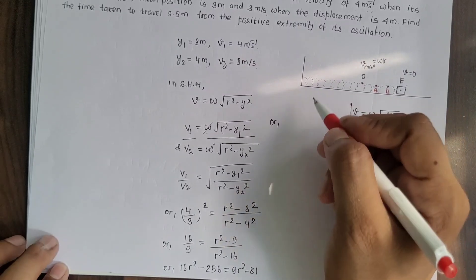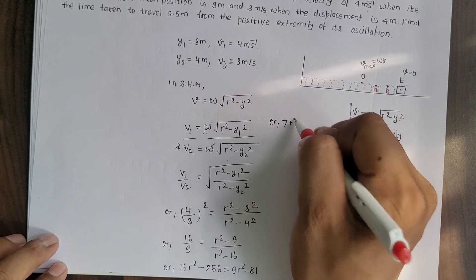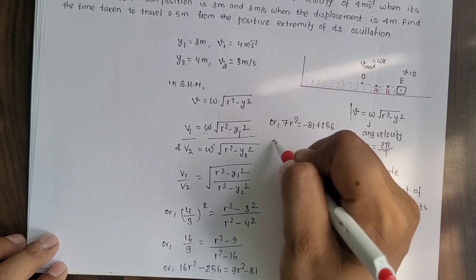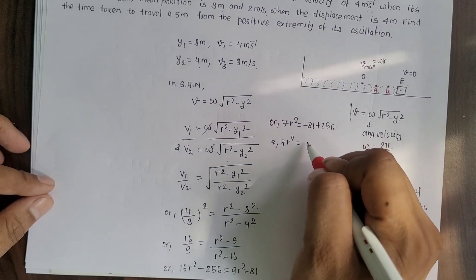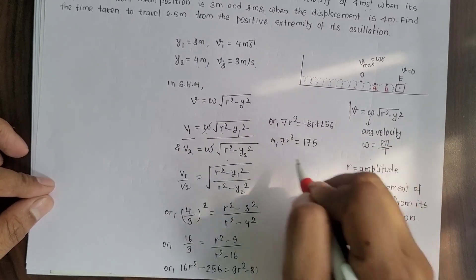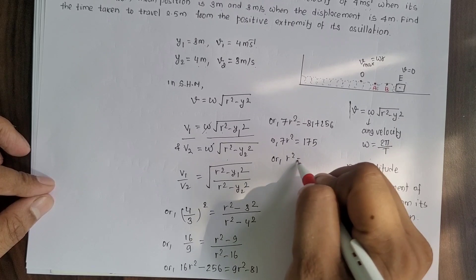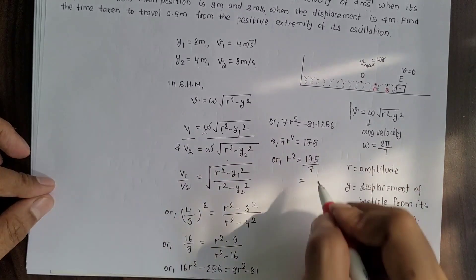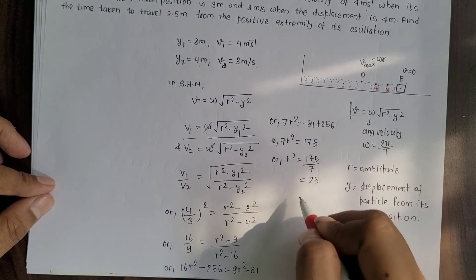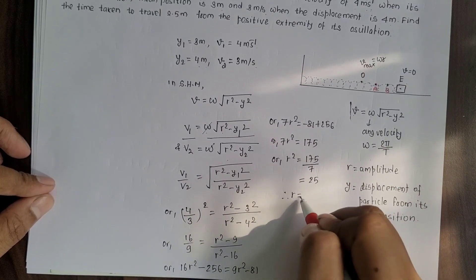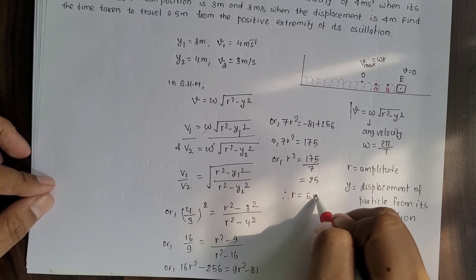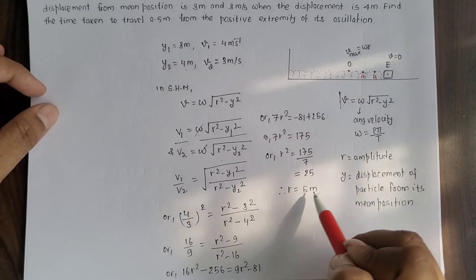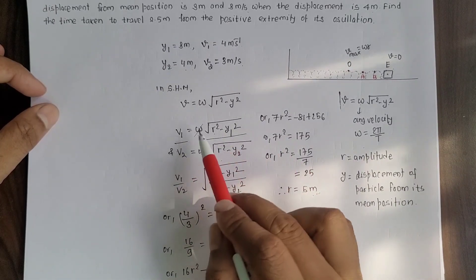Solving the equation, we get 7r² = -81 + 256, so 7r² = 175, therefore r² = 175/7 = 25, and the amplitude of the given oscillation r = 5 meter.